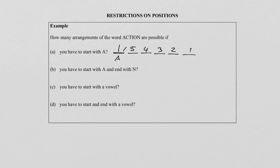According to the Counting Principle, we multiply this to get the number of arrangements. You will notice that multiplying by one doesn't make a difference to our answer. So looking at five down to one, as I explained before, this gives you five factorial, and the answer is 120 when you solve that.